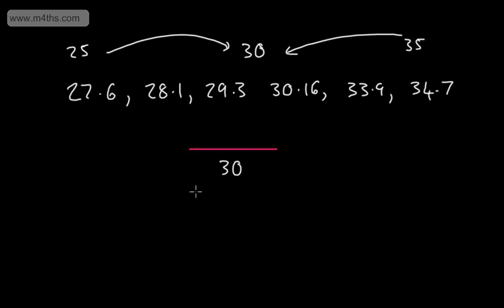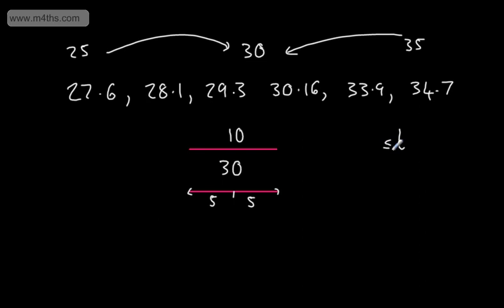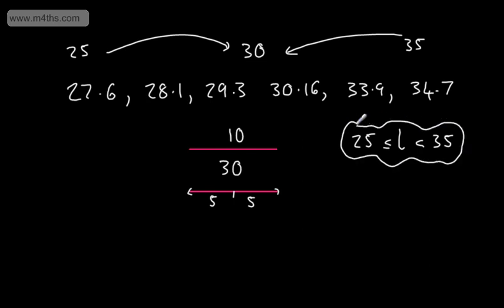The way I like to do it is draw a line above and below — you certainly don't need to, but it might help. What we're doing is considering an interval of 10, splitting that in half and going 5 below and 5 above. So the length could be equal to or greater than 30 minus 5, which gives 25, yet strictly less than 35. We'd say 25 is the lower bound (LB) and 35 is the upper bound (UB).